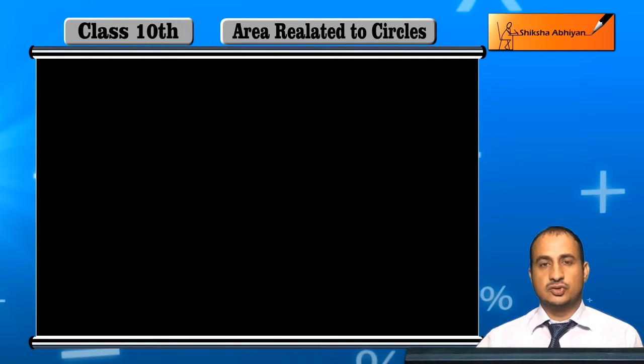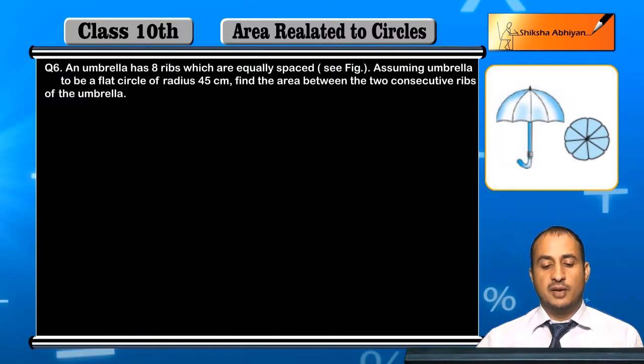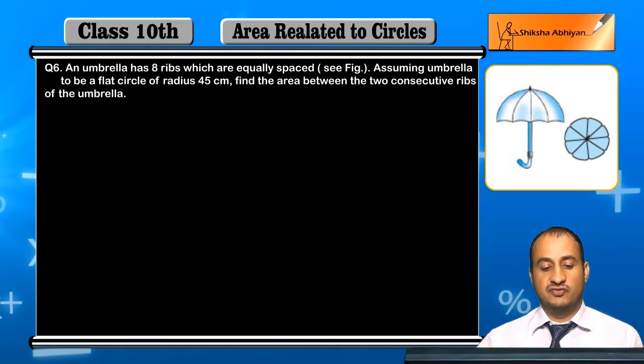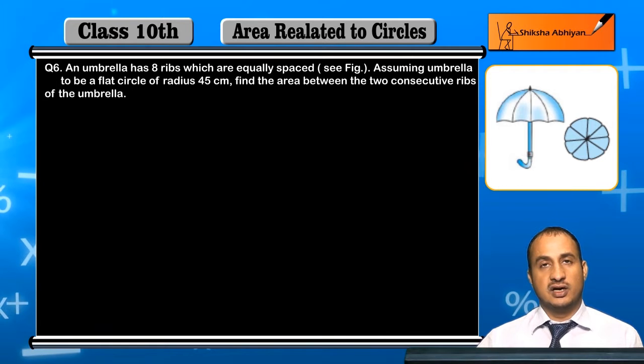Now students, see the 6th question. The question is: an umbrella has 8 ribs which are equally spaced. Assuming the umbrella to be a flat circle of radius 45 cm, find the area between the two consecutive ribs of the umbrella.